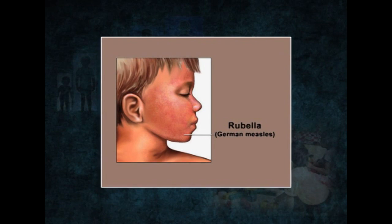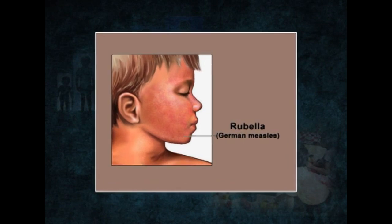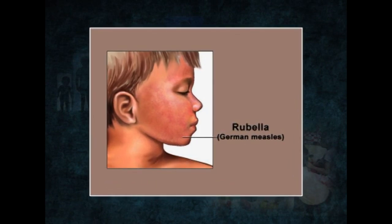The next important complication is maternal diseases and infections. Maternal diseases and infections can produce defects in offspring by crossing the placental barrier or they can cause damage during birth. For example, rubella, which is German measles, is one disease that can cause prenatal defects. Women who plan to have children should have a blood test before becoming pregnant to determine if they are immune to the disease.